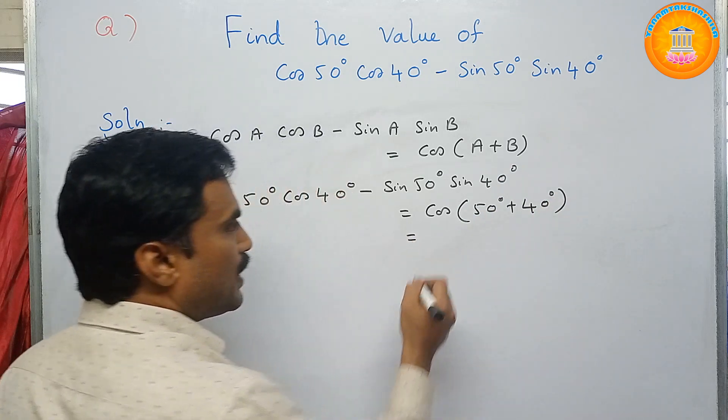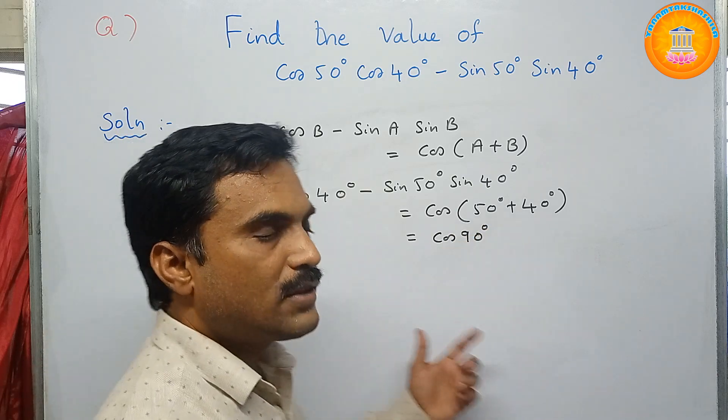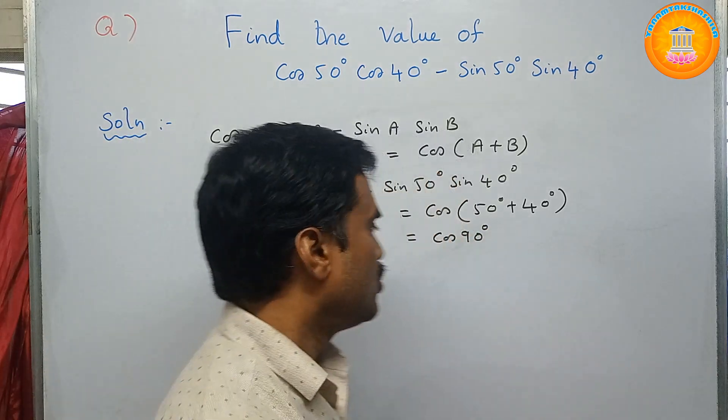Now, what is 50 plus 40? That is 90. So, cos 90 degrees. Now, what is cos 90 degrees? The value is 0.